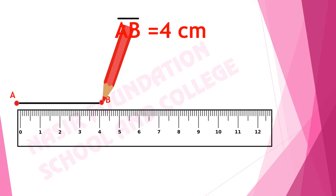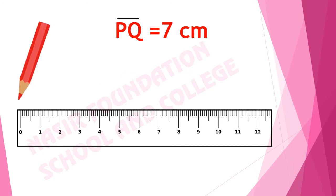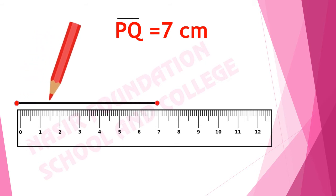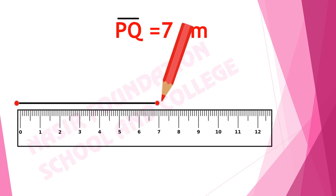We will mark them as point A and point B. To draw another line segment, we place the scale and mark the starting point at zero centimeter. As we have to draw line segment PQ of seven centimeter, we will mark another point at seven centimeter, and then we will join it with the help of a pencil. The starting point is P and ending point is Q. This is line segment PQ of seven centimeter.